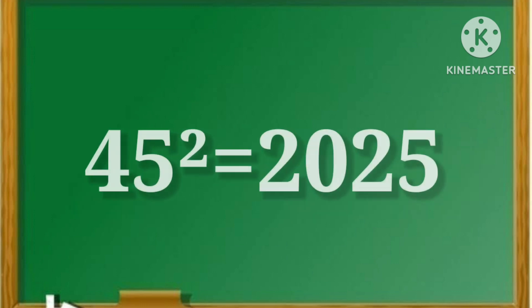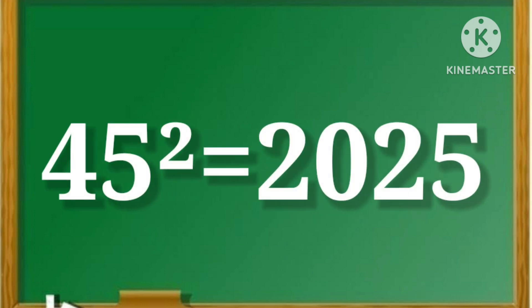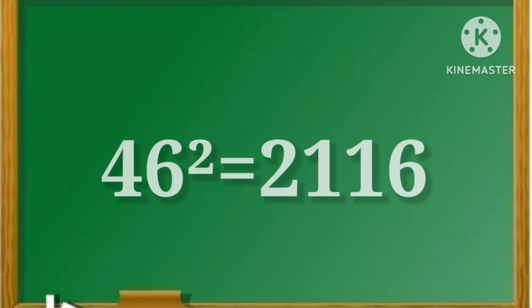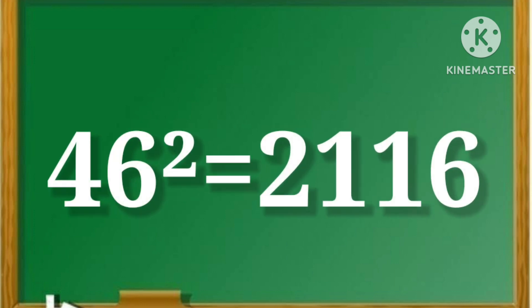45 square is equal to 2025. 46 square is equal to 2116.